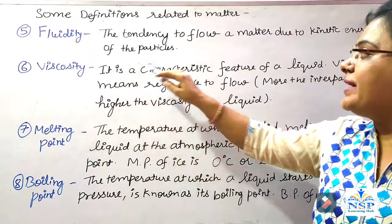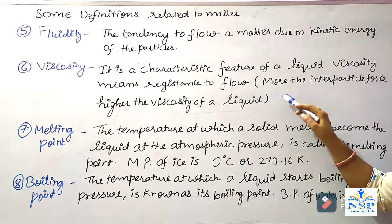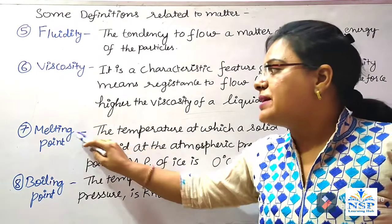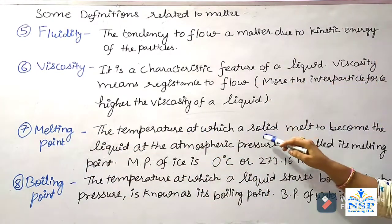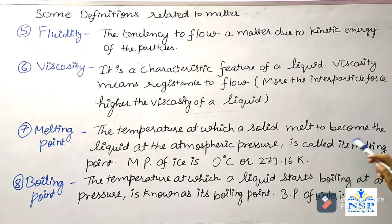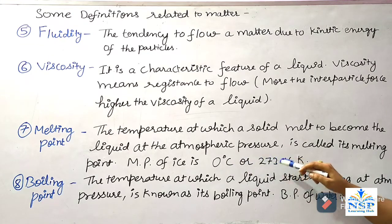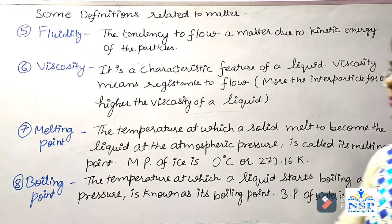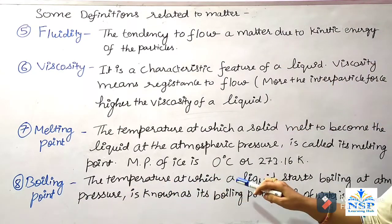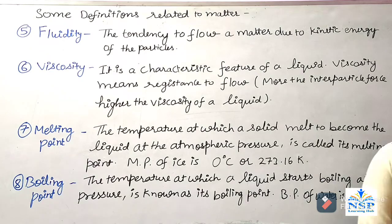Number five, fluidity — the tendency to flow of matter due to kinetic energy of the particles is called fluidity. The fluidity of the gaseous state is very high compared to liquids. Viscosity is a characteristic feature of a liquid meaning resistance to flow. More the interparticle force, higher the viscosity — for example, honey. Melting point: the temperature at which a solid melts to become liquid at atmospheric pressure. Melting point of ice is 0°C or 273.16 K. Boiling point: the temperature at which a liquid starts boiling at atmospheric pressure — boiling point of water is 100°C.